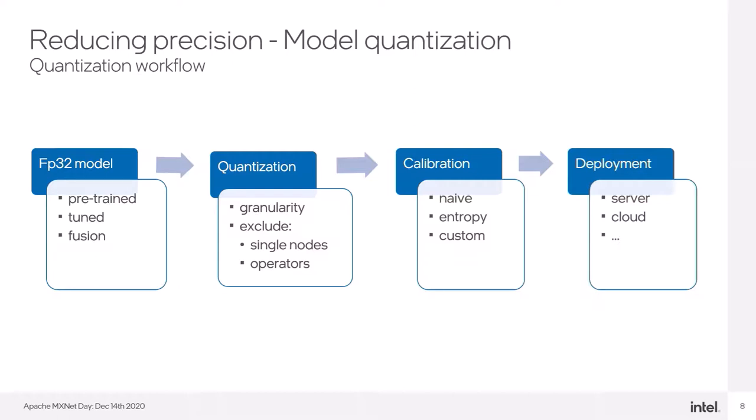We are supporting three types of calibrations. First one is naive, where the threshold is based on minimum and maximum value of the tensor. Second one is entropy, where thresholds is calculated using KL divergence to determine the best symmetrical quantization thresholds for given histogram of values.